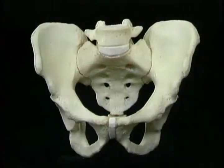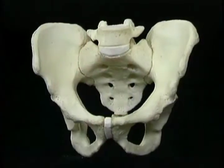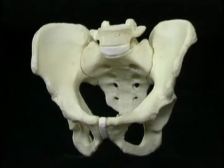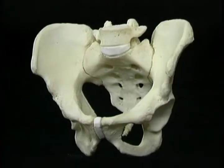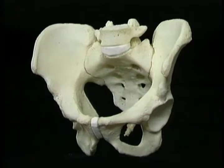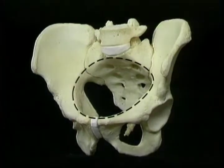We've already seen the upper parts of the bony pelvis. Now we need to look at the parts of it that lie below the pelvic brim. Let's get oriented. Here's the bony pelvis together with the fifth lumbar vertebra. Here's the pelvic brim.